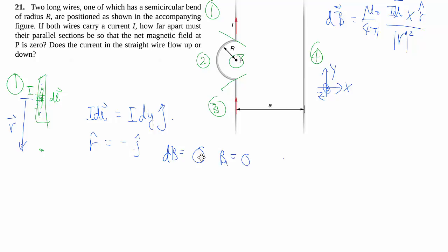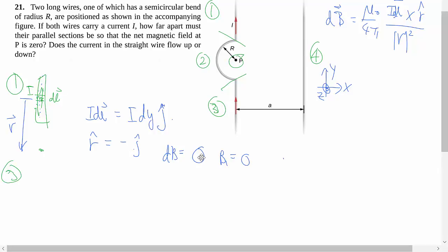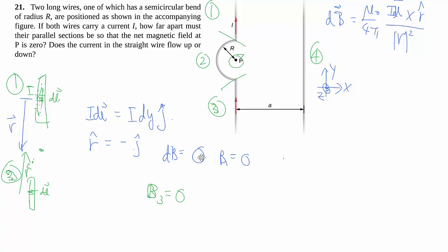So then for segment 1, there is no magnetic field at that particular point. The same thing goes for segment 3, because it's just kind of the reverse, and the point is up there, so then there's your r. So then it's still j cross j, so then b3 is also 0. So we'll put that up here so we can remember that, while giving myself more space to do the second part.